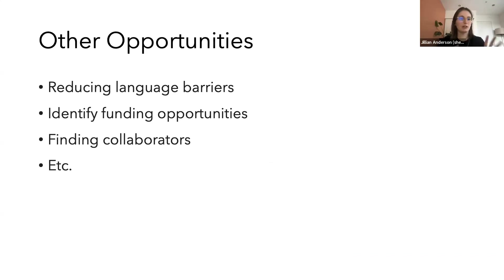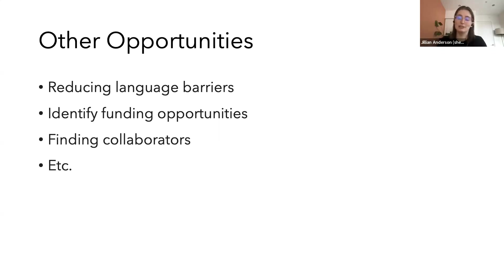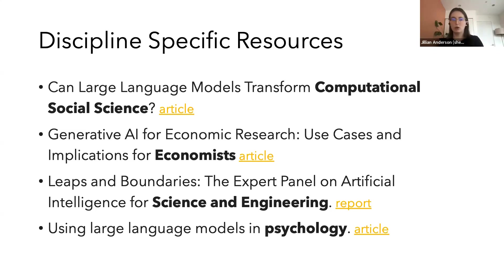A few other opportunities we don't often think about: the biggest one is reducing language barriers. In a very English-centric field, being able to reduce language barriers and have folks whose first language isn't English be able to publish is only going to have great potential. Also things like identifying funding opportunities, searching for grants online, and finding collaborators — generative AI may be able to help with interdisciplinary collaboration where someone has written work in a space you're interested in.